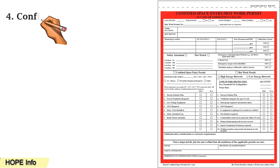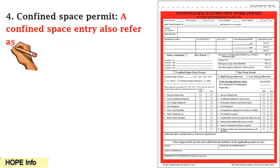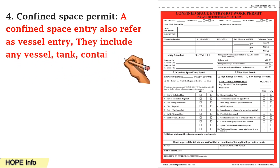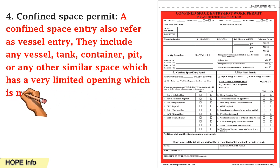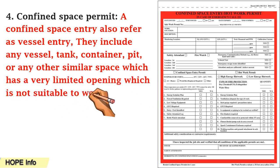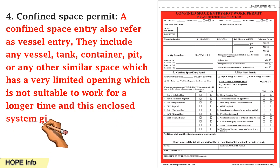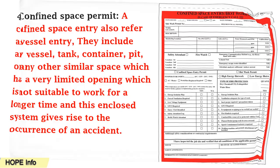Number four is the confined space permit, also referred to as a vessel entry permit. This includes any vessel, tank, container, pit, or any other similar space that has a very limited opening, is not suitable for working in for a longer time, and where conditions give rise to the occurrence of an accident.